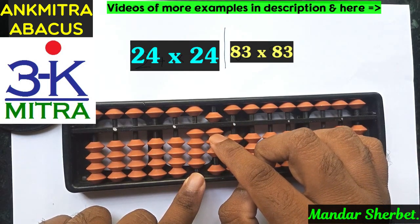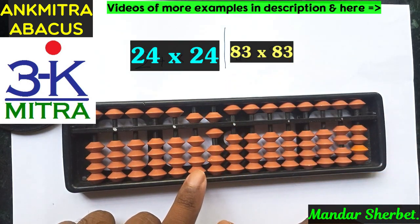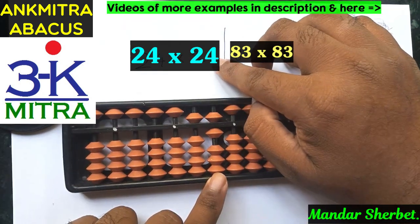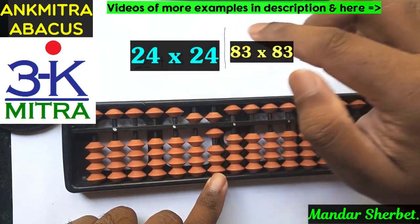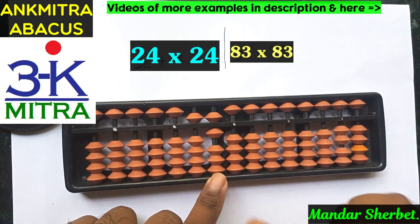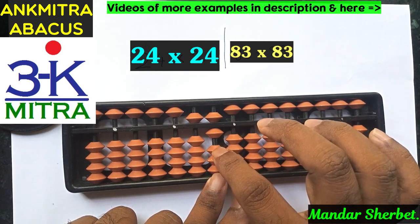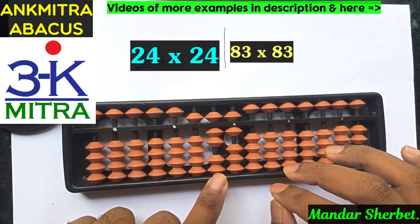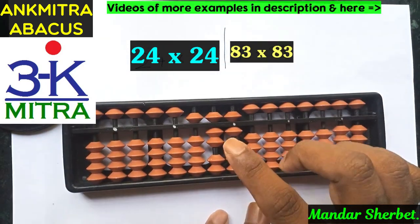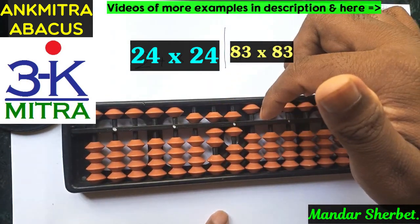Adding eight here I have to do minus 2 plus 10, and that calculation is done. Now moving one place to the right to the second rod, I take 4 multiplied by 4. Four multiplied by 4 is 16 — already a two-digit number, so nothing extra to be done. We just take 16 on the abacus from the second rod: one on this rod and six on the next. The answer for 24 multiplied by 24 is 576 — the square of 24 is 576.